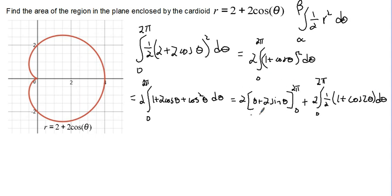So we'll start evaluating the first piece. We have 2 times 2 pi plus 2 times the sine of 2 pi, and the sine of 2 pi is 0, so that's just 2 pi plus 0, minus, and then we'll evaluate this at 0, 0 plus 2 times the sine of 0, so that's 0 plus 0.